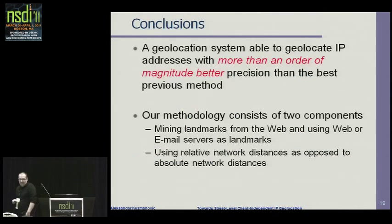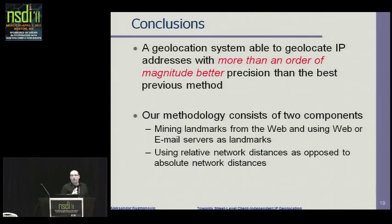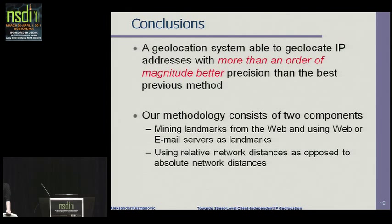To conclude, we have designed a geolocation system able to geolocate IP addresses more than one order of magnitude better than previous systems. This is a host-independent system that does not require any collaboration with the end user. Our methodology consists of two components: first, mining landmarks using web and email servers scattered around the world for accurate geolocation; and second, using relative network distances as opposed to absolute network distances to achieve this result.